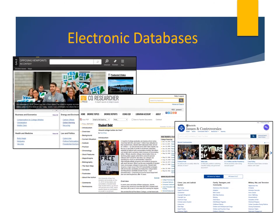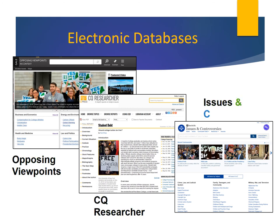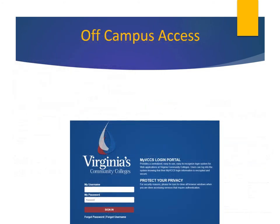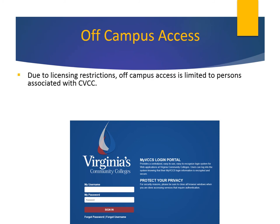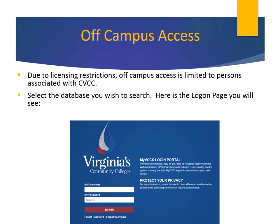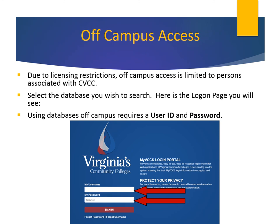When you begin your research on a controversial topic or current event, be sure to check out these three databases: Opposing Viewpoints, CQ Researcher, and Issues and Controversies. You can access the electronic databases from your home computer. Due to licensing restrictions, off-campus access is limited to persons associated with CVCC. Using databases off-campus requires a username and password, the same as your CVCC Blackboard and email user ID and password.